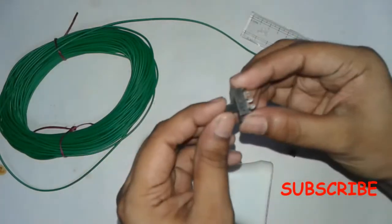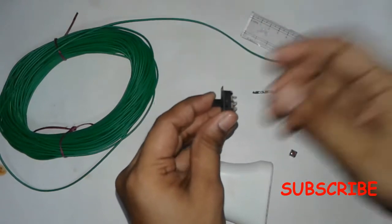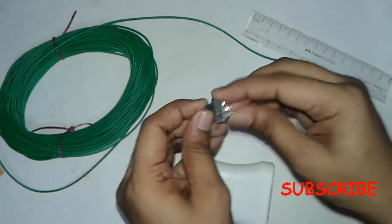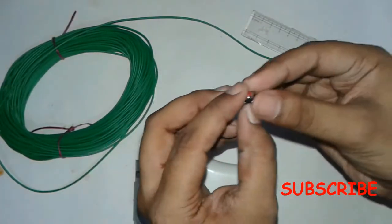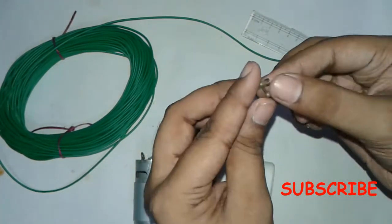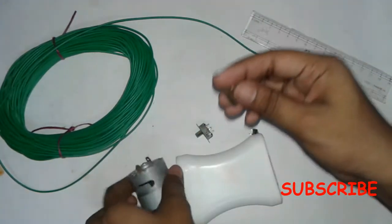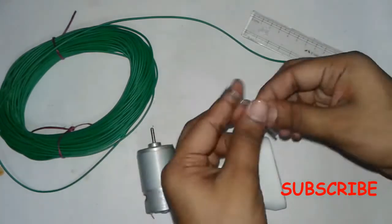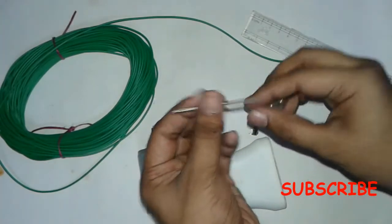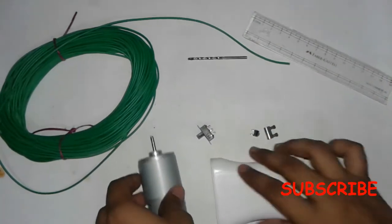Now you need a DPDT switch, push type switch, electrical connector. This is a type of electrical connector I use here to connect the motor shaft to that of the drill and also a drill. Now let's start making it.